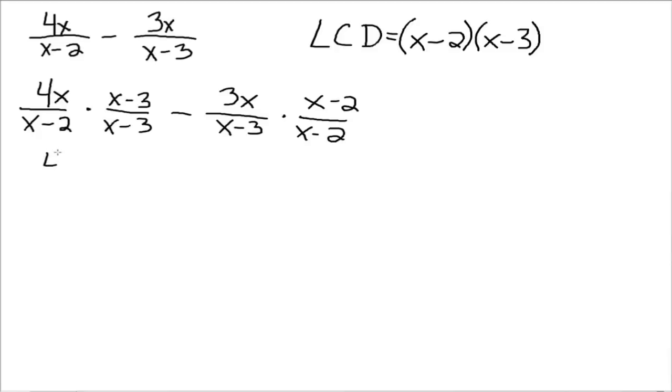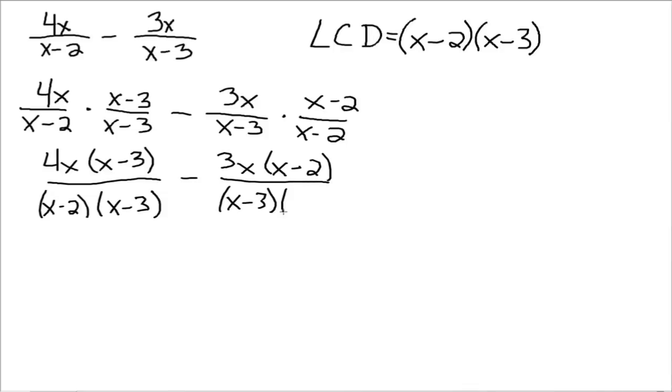So in the next line, we'll jump down and have 4x times x minus 3 divided by our LCD. And I would just leave the LCD written as x minus 2 times x minus 3. You could multiply it out, but it's just more work in the end because we're going to want it factored later anyway. Then we have minus, and here we have 3x times x minus 2 divided by our LCD again. Now we've got the denominators to be exactly the same. x minus 2 times x minus 3 is the same thing as x minus 3 times x minus 2.